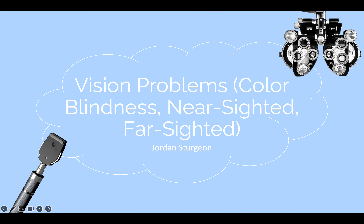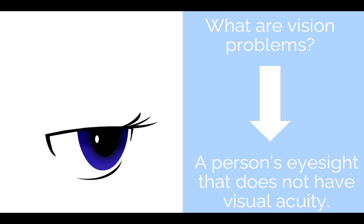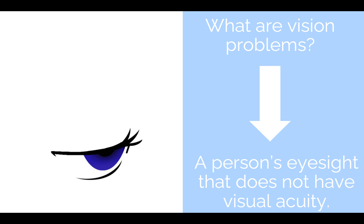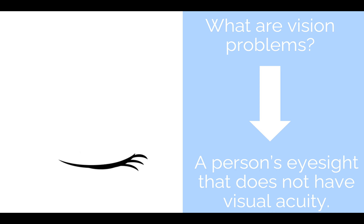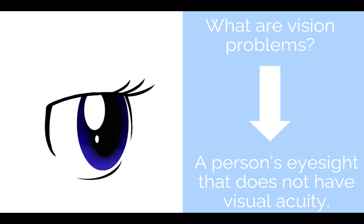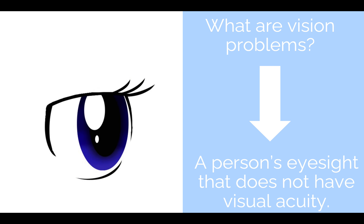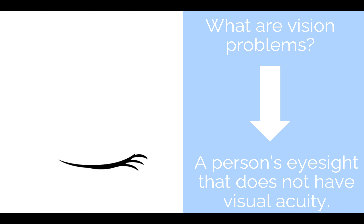I'm Jordan Sturgeon and today we're going to be talking about vision problems for teachers in the classroom. So what are vision problems? Vision problems means that a person's eyesight doesn't have visual acuity, meaning they can't really see objects as clearly as a person with normal eyesight could.